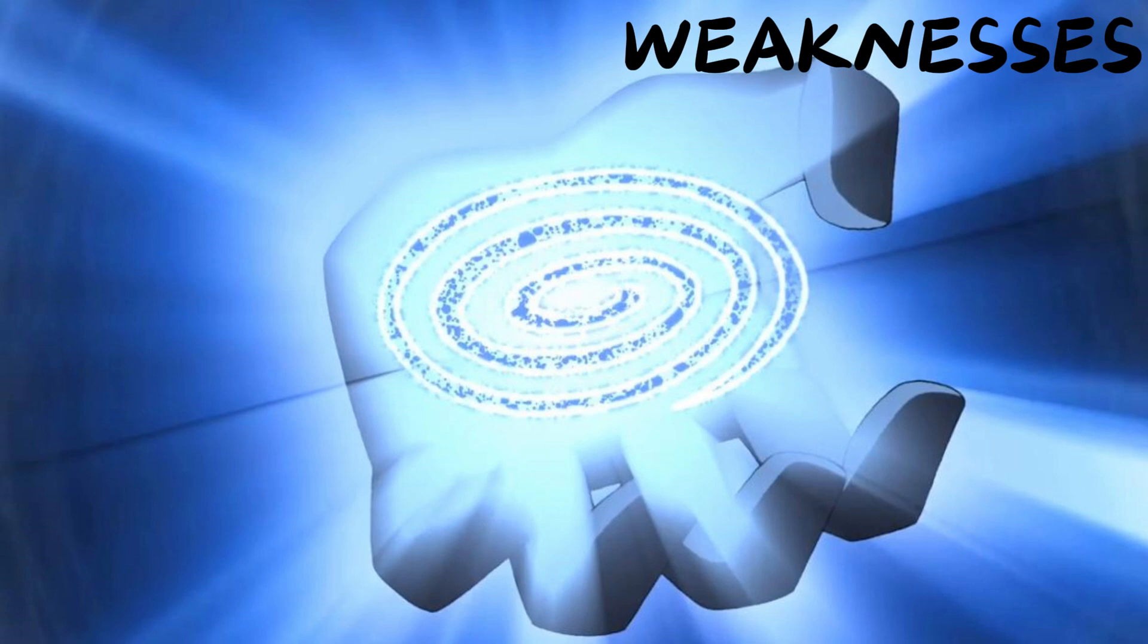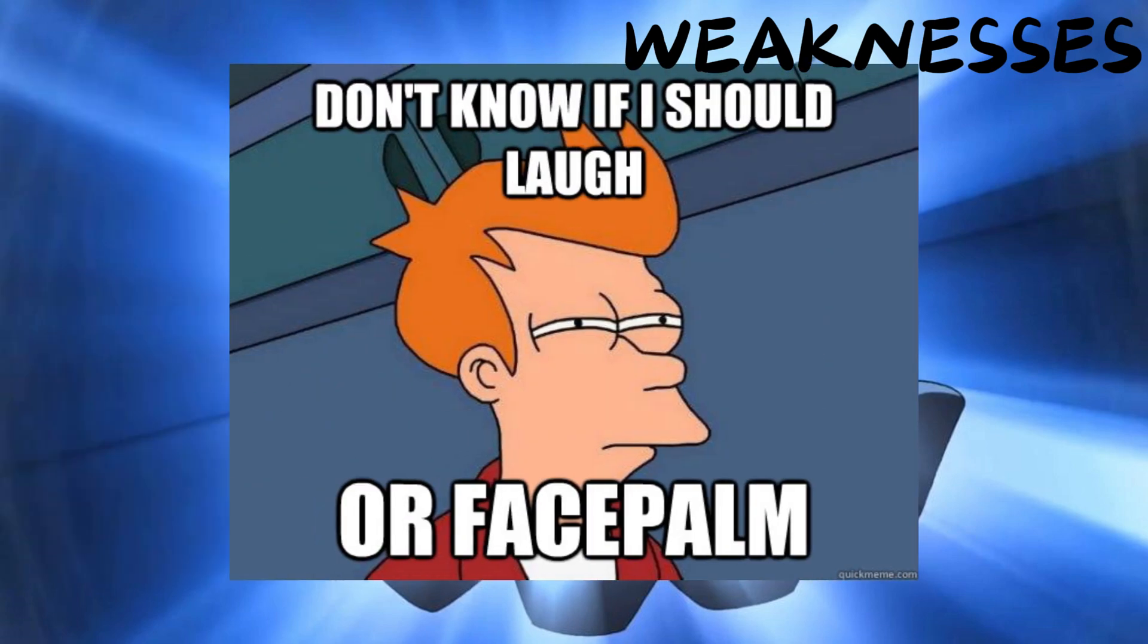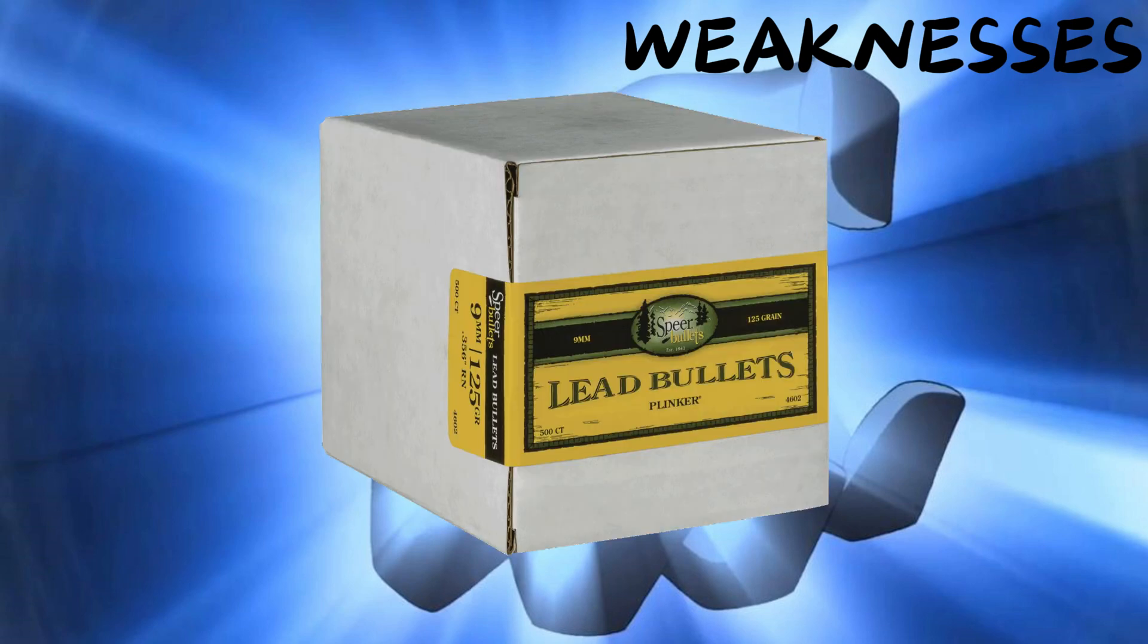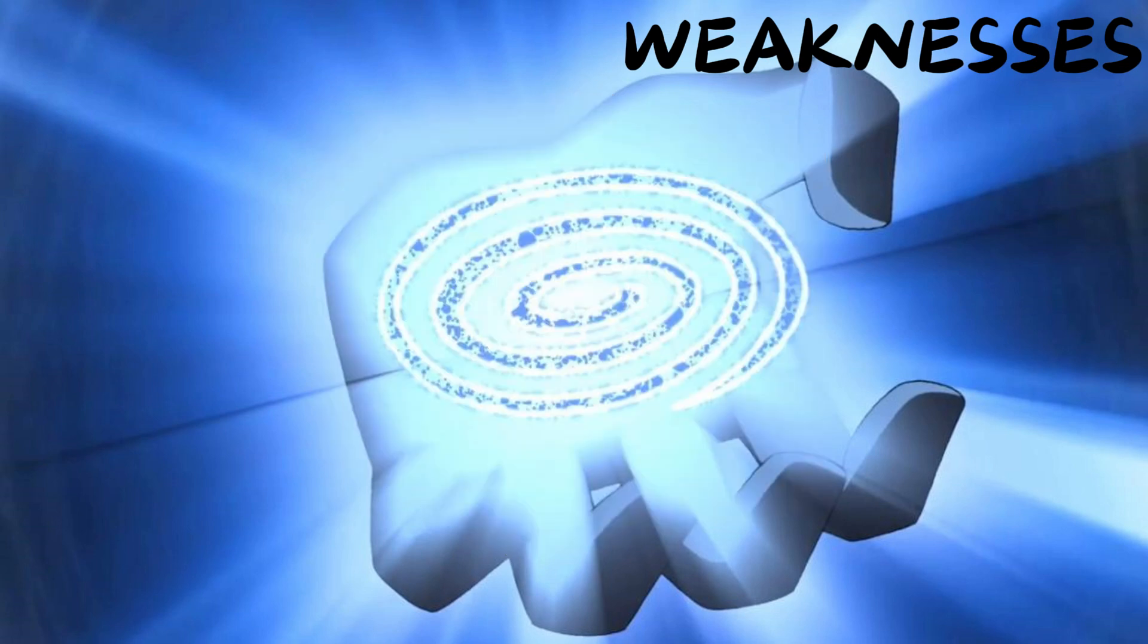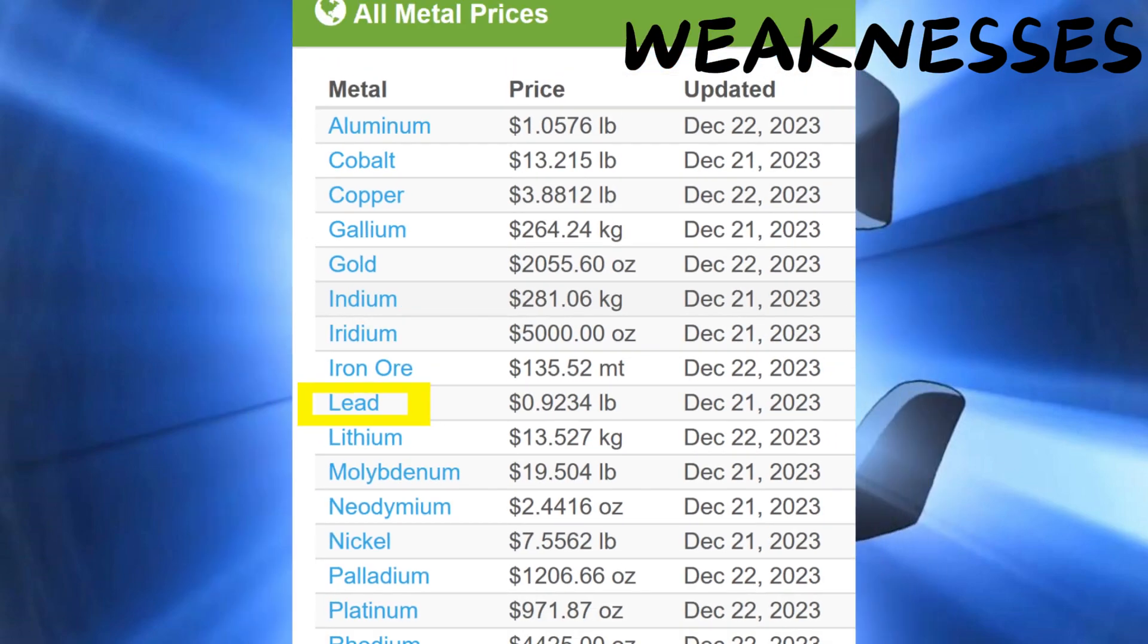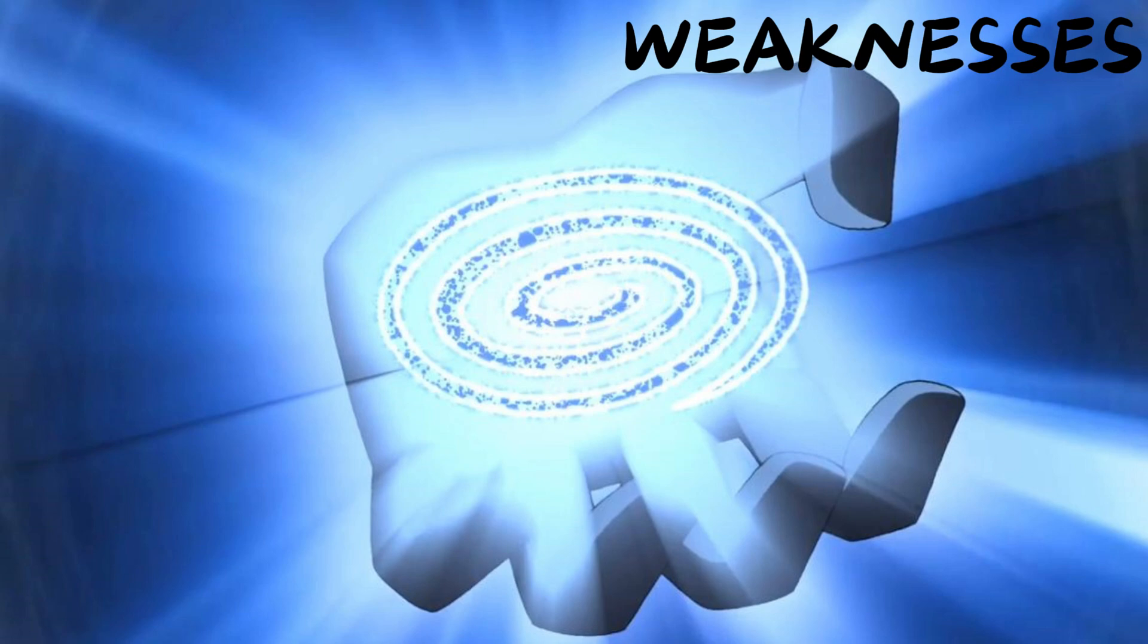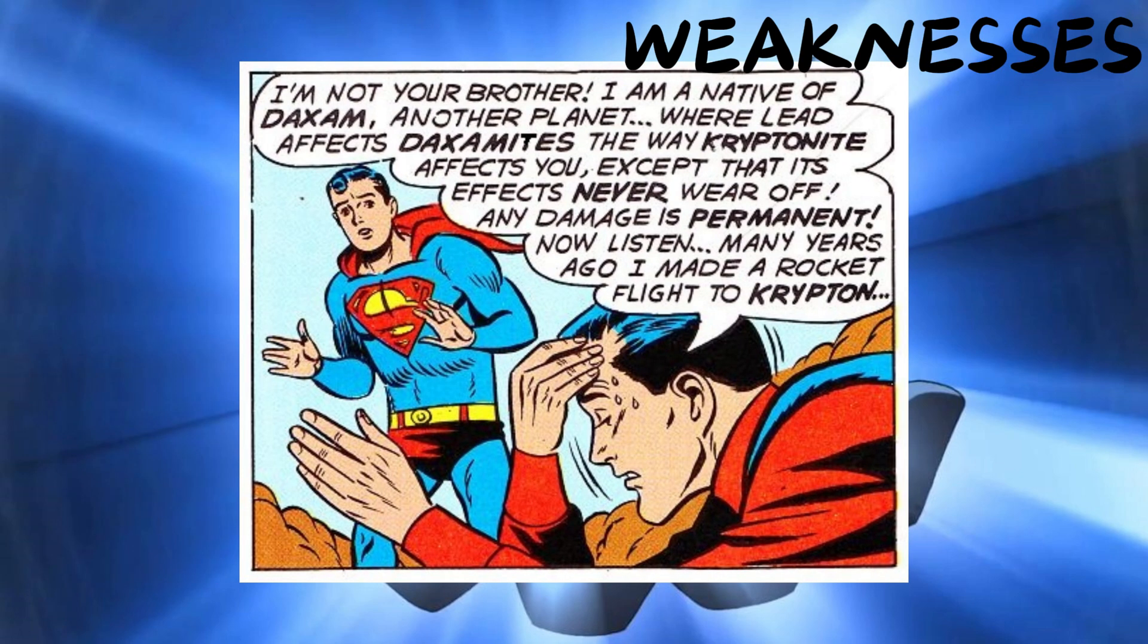I saved this one for last because it is both insanely ridiculous and kind of hilarious. A Daxamite's gravest weakness is... Lead. No, you did not mishear me. I said lead. A substance so common, a pound of it is worth less than one US dollar. When exposed to lead, Daxamites lose their powers completely and begin to... die. I am not making this up.